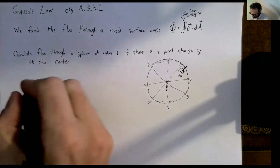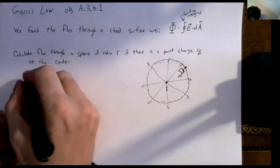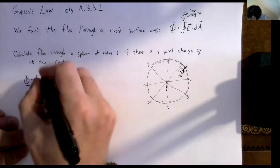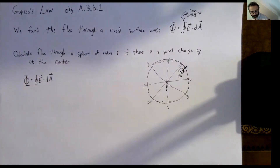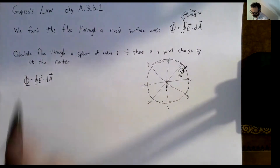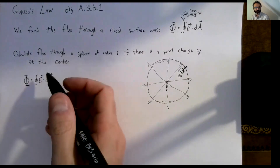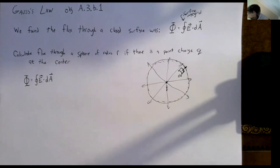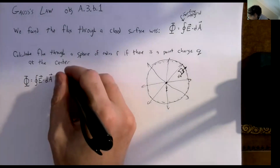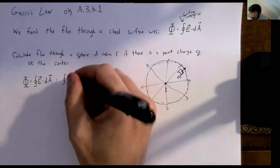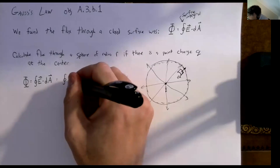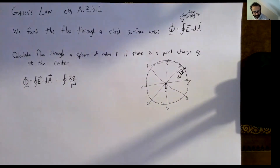We know the electric field from a point charge — we want to find the surface integral of E dot dA. We know from Coulomb's Law that the electric field magnitude is kq over r squared. But we also need the direction — what direction is that in?